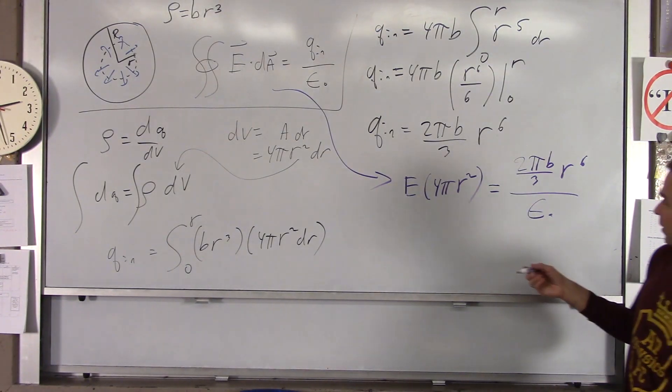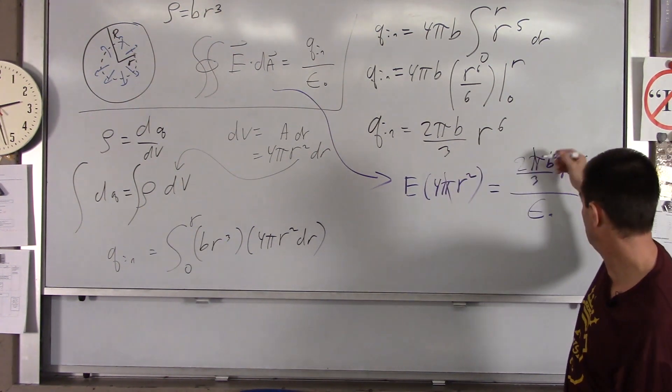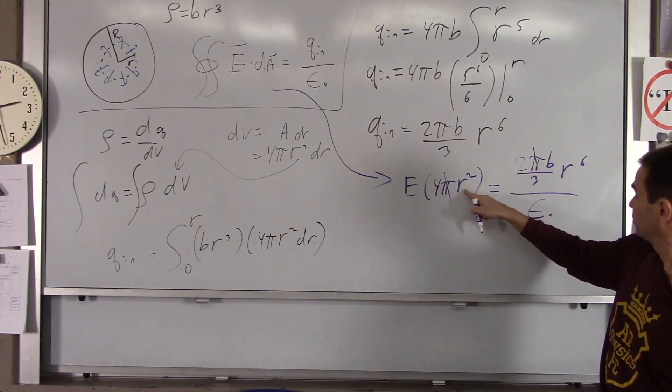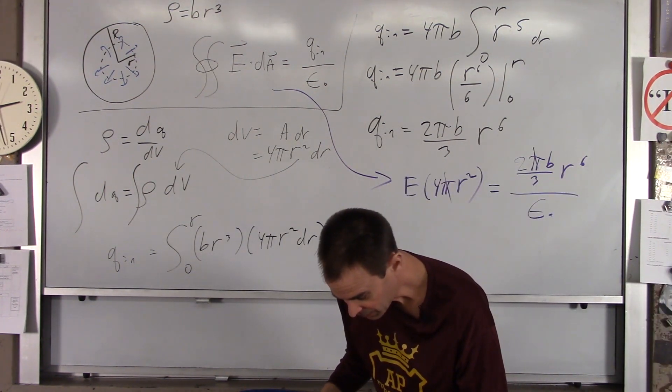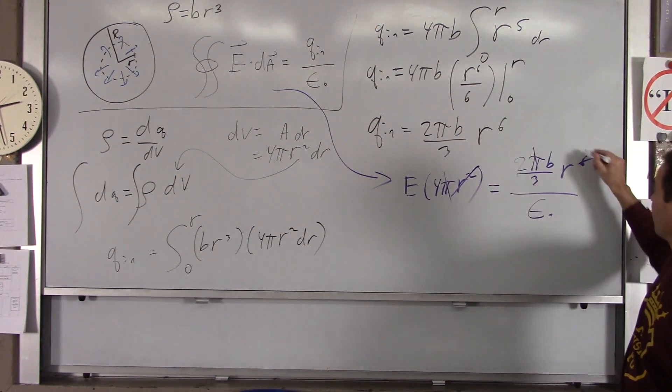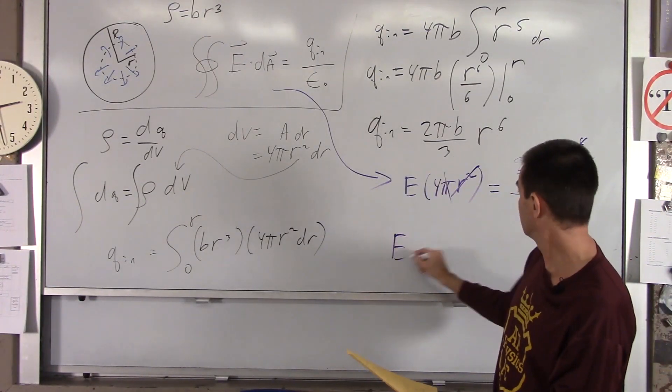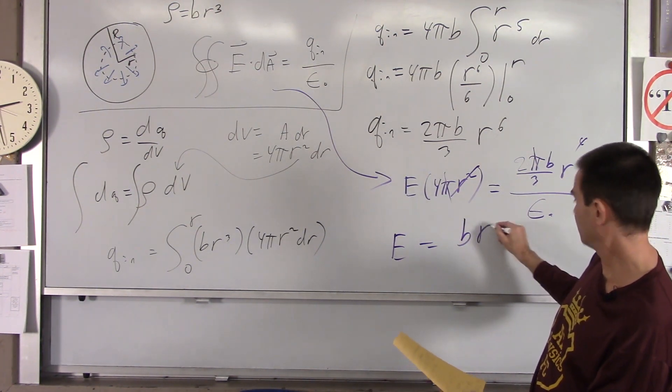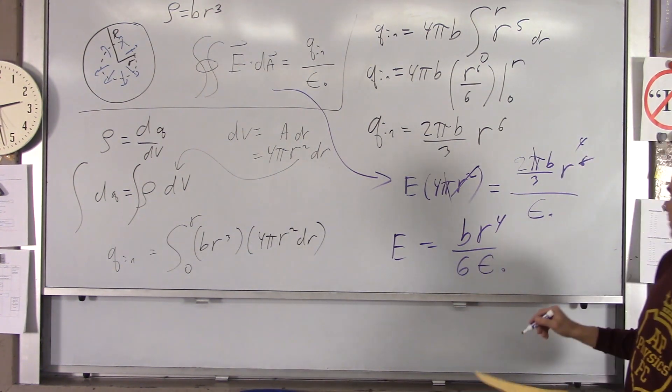And again, we know when we integrate E dot dA, it's just E times the area, the surface area of that sphere, which is 4 pi r squared. So we'll continue this right there. So when you integrate that, you got E times 4 pi r squared equals q_in, which is this, 2 pi b over 3 r to the sixth, all over epsilon naught. And you get some canceling here. The pi's drop out.